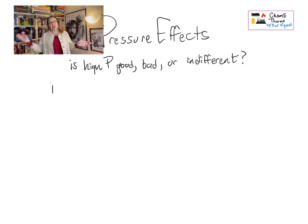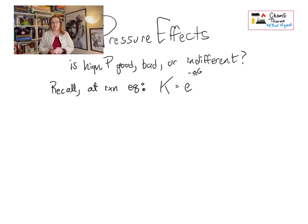It's not always good. It's not always bad. In fact, sometimes it has no impact whatsoever. And so, when we're looking at a reaction, our governing equation for what is happening at equilibrium is that the equilibrium constant is equal to e to the negative delta G, adjusted for temperature, over RT.